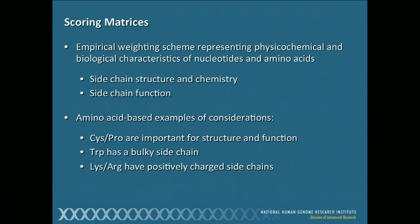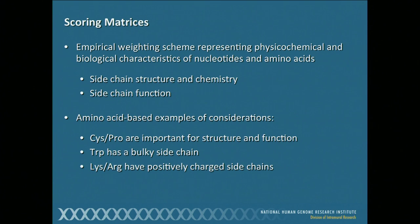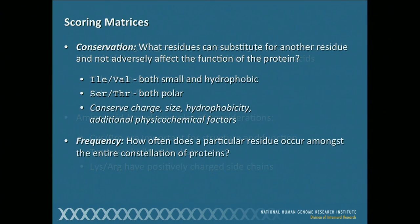Prolines, when found at the end of an alpha helix, more normally end up breaking the chain. Things like tryptophan can only be placed in so many locations because of a bulky side chain. Lysines and arginines both have a positive charge and are overrepresented in proteins that bind to DNA, allowing them to bind the negatively charged backbone. So in putting these matrices together, we're taking into account charge, shape, and all of those kinds of physicochemical things.